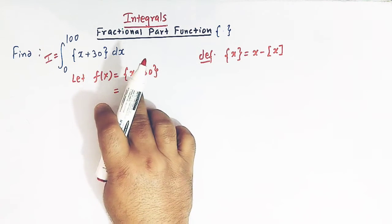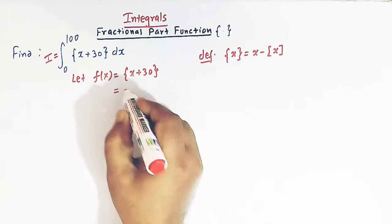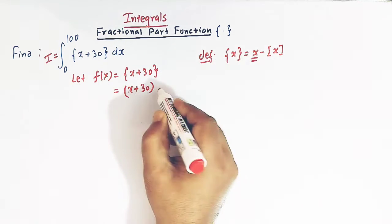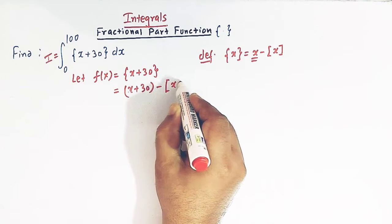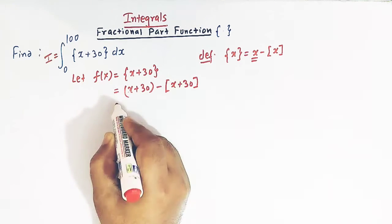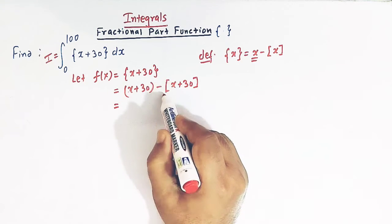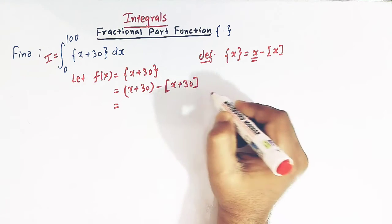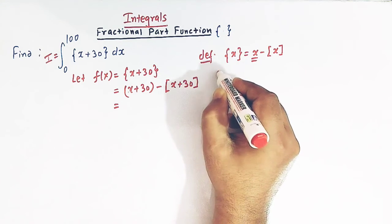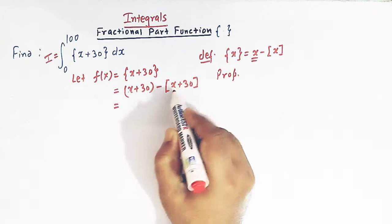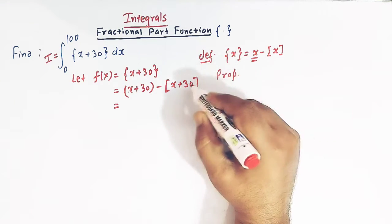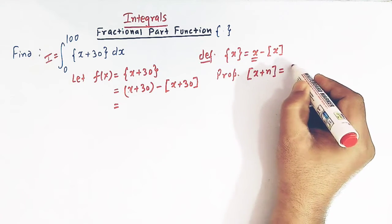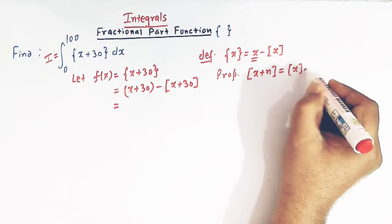So we can write the fractional part of x plus 30 as x plus 30 minus the greatest integer of x plus 30. Now we have the greatest integer of x plus 30, so let us apply one important property of greatest integer function. The property states that the greatest integer of x plus n can be written as the greatest integer of x plus n, where n belongs to the set of integers.